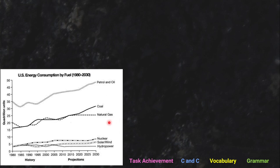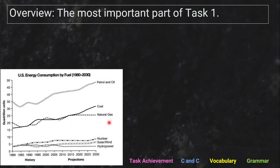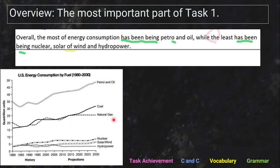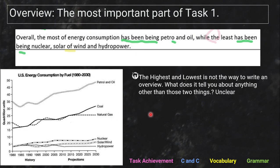Now the more important part — the overview. In fact, it is the most important part of Task 1. This is where you make it or blow it. Her overview reads: 'Overall, the most of energy consumption has been being petro and oil, while the least has been being nuclear, solar and wind, and hydropower.' Someone from Thailand — or worldwide — has told her that an overview is reporting the highest and the lowest. That's what she thinks you need to look for.